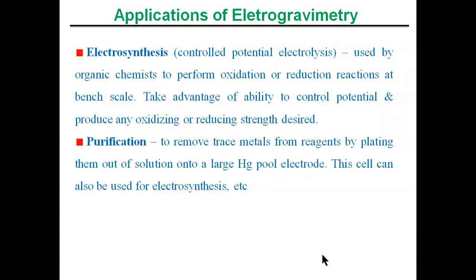Electrosynthesis is used by organic chemists to perform oxidation or reduction reactions at bench scale, taking advantage of the ability to control potential and produce any desired oxidizing or reducing strength. The last application is purification — removing trace metals from reagents by plating them out of solution onto a large mercury pool electrode. This same cell can also be used for electrosynthesis. The electrode can thus serve both purification and electrosynthesis purposes.